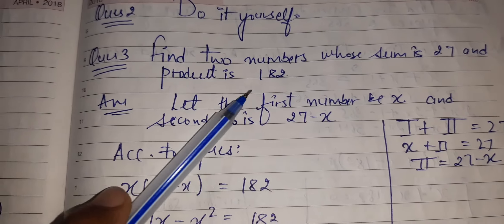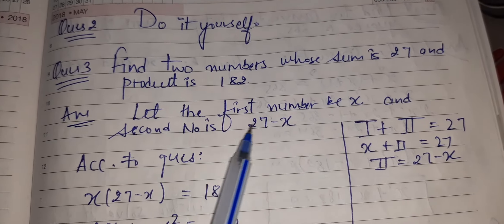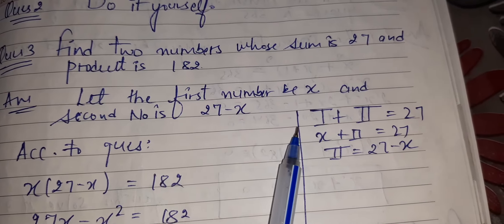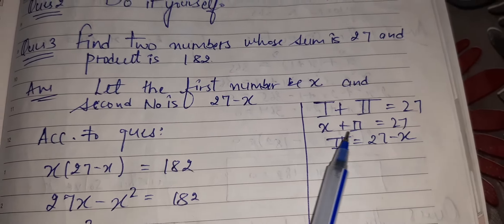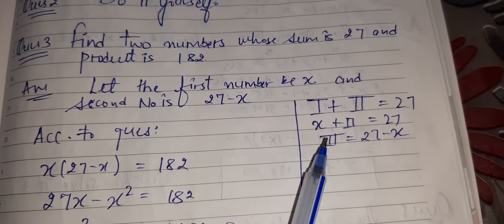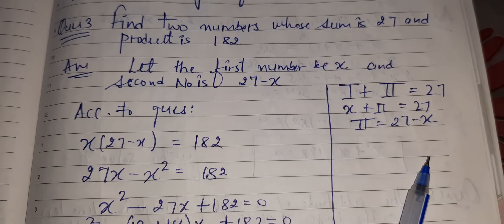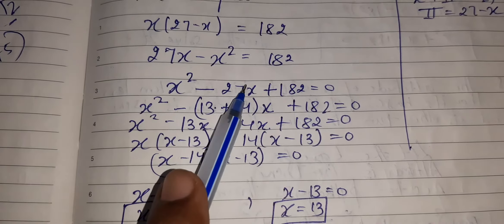Question number 2, do it yourself. Question number 3: find two numbers whose sum is 27 and the product is 182. Let the first number be x and the second number be 27 - x. First number plus second number is equal to 27. The condition is given in the question: x plus first number is x, it will go this side, second number will come out as 27 - x. Now the product of these two numbers is 182. I have solved it.